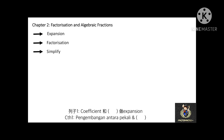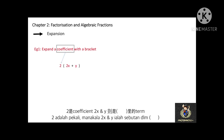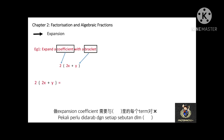Let's see some expansion examples. Example 1: expand a coefficient with a bracket. In this example, 2 is the coefficient and the bracket contains the term 2x plus y. To expand a bracket with a coefficient, the coefficient is multiplied to each and every term within the bracket.